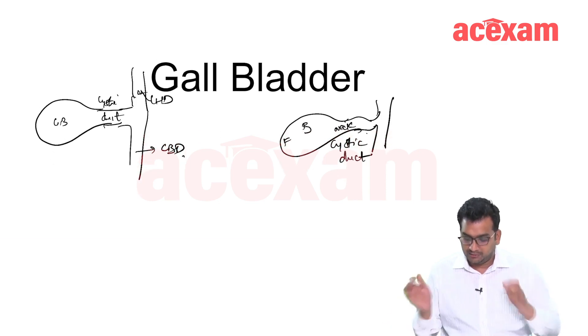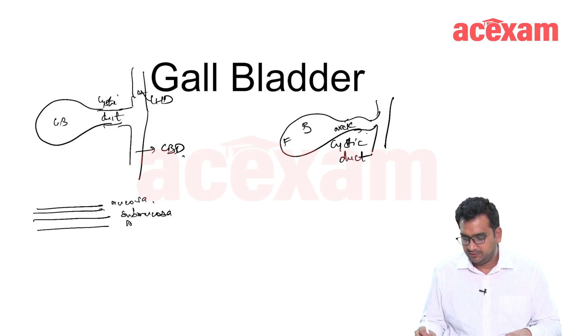Now gallbladder, normally in intestine or in the GIT, what we have in the layers we have mucosa, then we have submucosa, and we have muscle or muscularis mucosa and we have epithelium, lamina propria and we have muscularis mucosa.